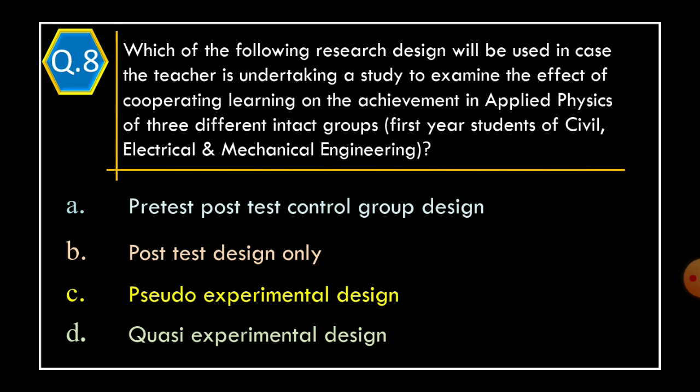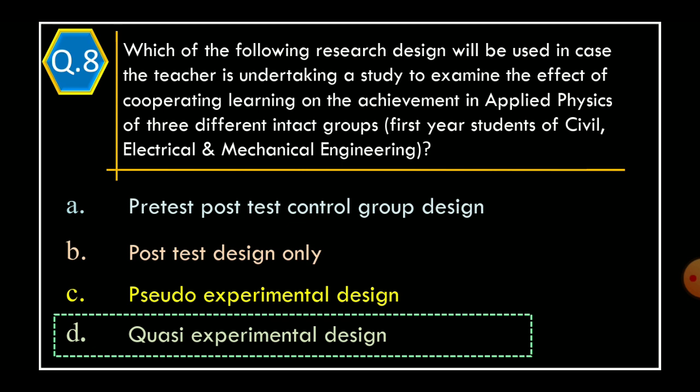Question 8: Which of the following research designs will be used in case the teacher is undertaking a study to examine the effect of cooperative learning on the achievement in applied physics of three different intact groups — first year students of civil, electrical, and mechanical engineering? Option A: pre-test post-test control group design. Option B: post-test design only. Option C: pseudo-experimental design. Option D: quasi-experimental design. The correct option is Option D, quasi-experimental design.